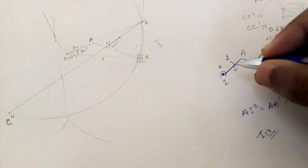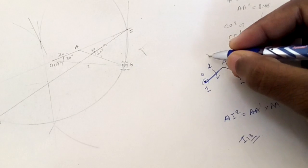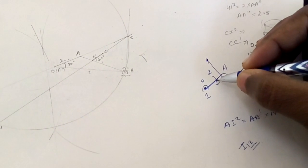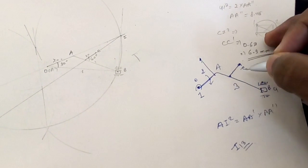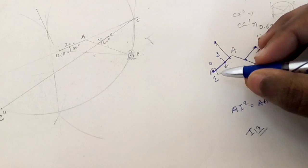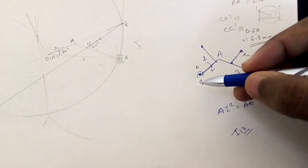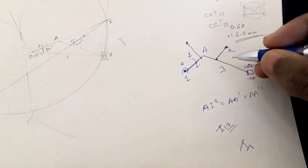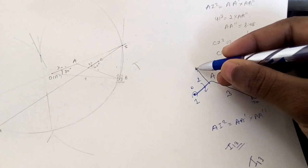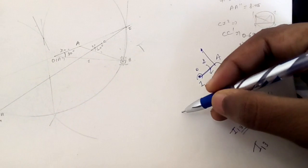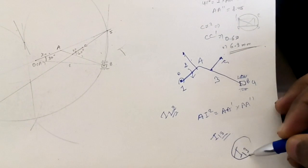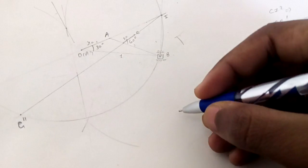The rule is: you always find the I-center with respect to the fixed link, so I₁ always comes first. Then identify which link the point lies on. Here C lies on link 3, so it's I₁₃. If the point lay on link 2, it would be I₁₂. So here we have to find I₁₃.